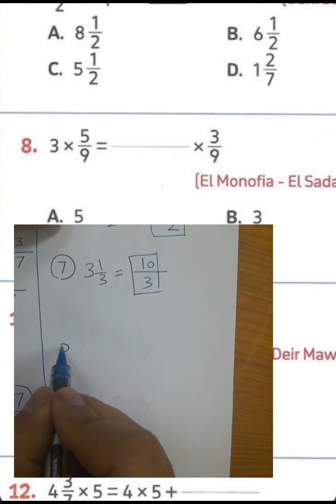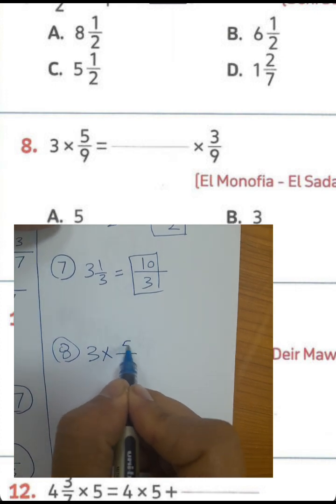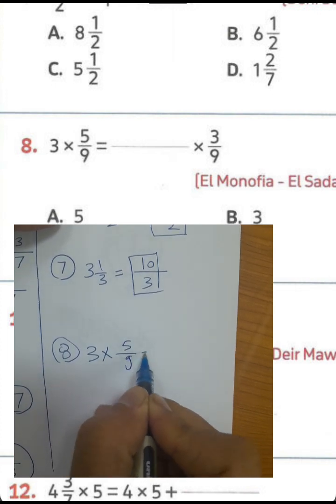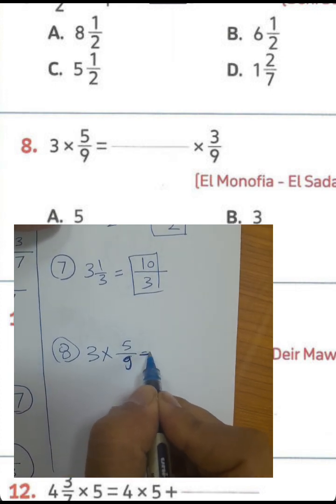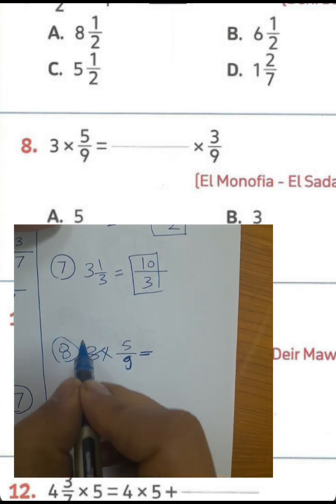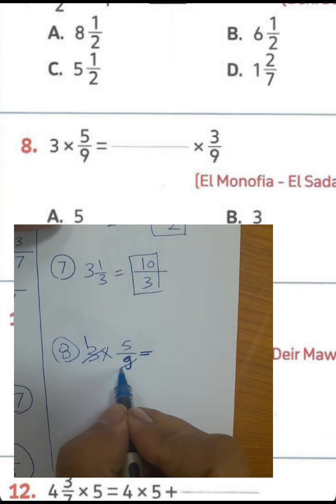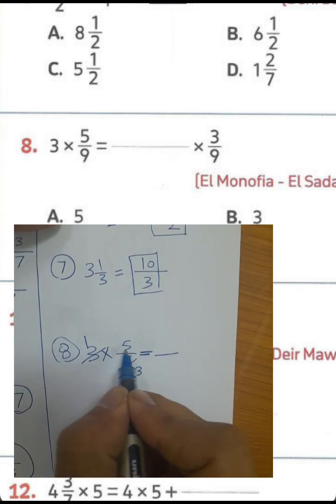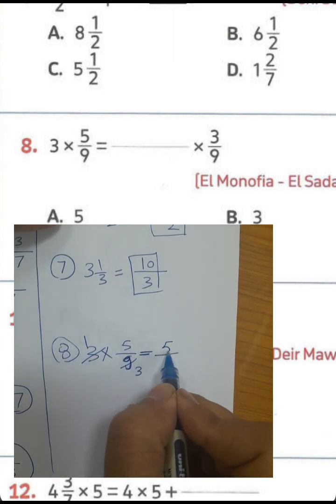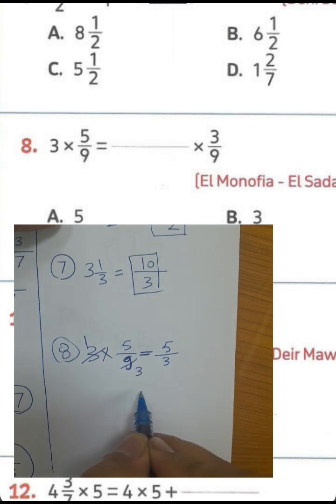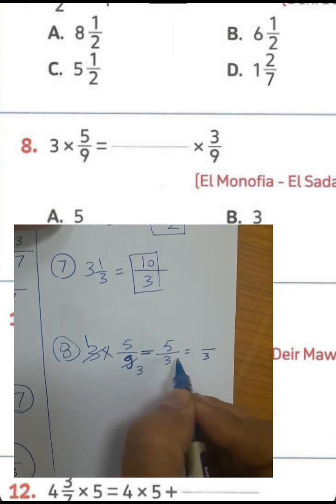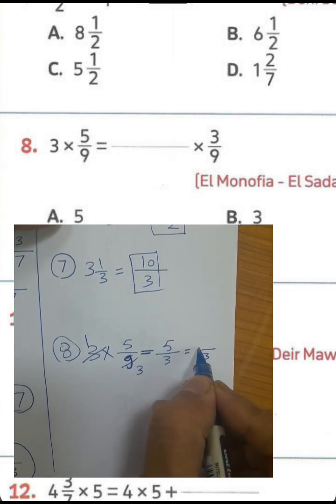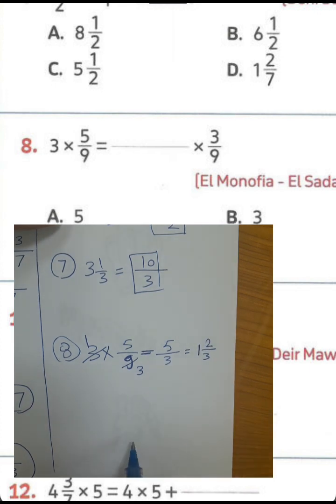Question number 8: 3 times 5 over 9. 3 divided by 3 equals 1, and 9 divided by 3 equals 3. Then 1 times 5 equals 5, so the result is 5 over 3. We can convert: 5 divided by 3 equals 1 with a remainder of 2, giving 1 and 2 over 3.